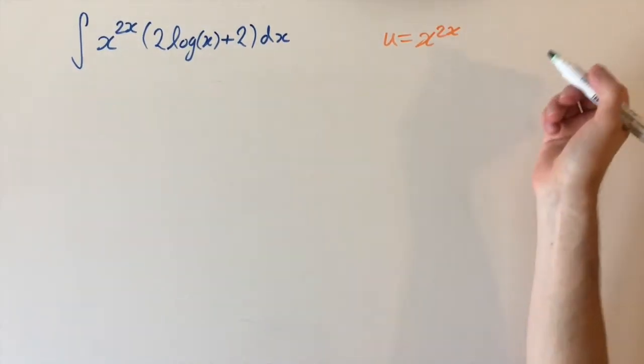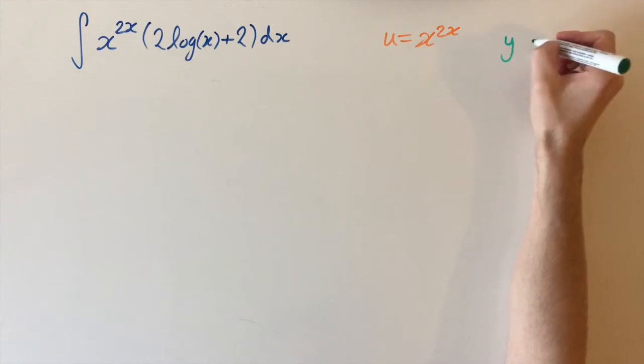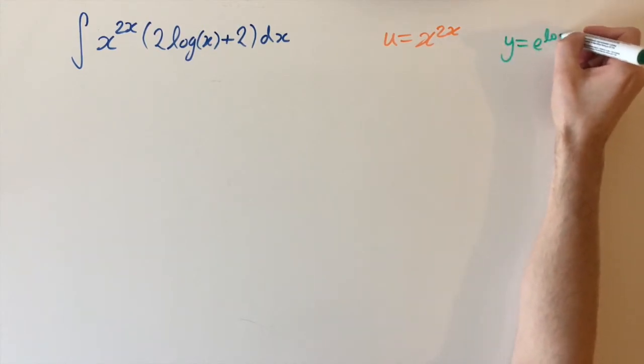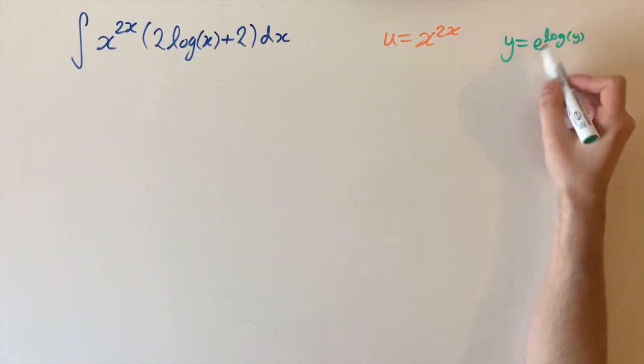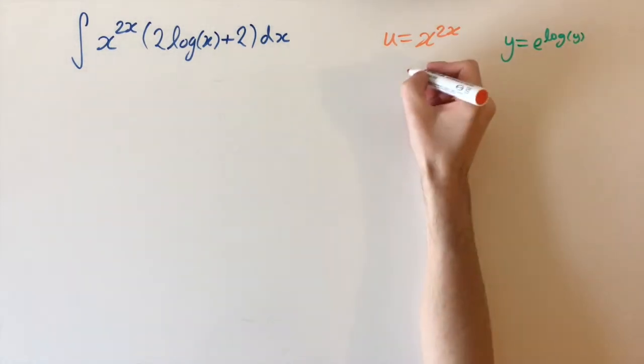Since we have a function to the power of another function, we can use this trick: for any number y, we can write it as e to the power of log of y. That's because log is the inverse of the exponential. So we can write u as e to the power of log of x to the power of 2x.